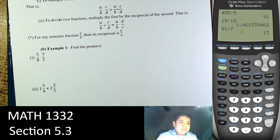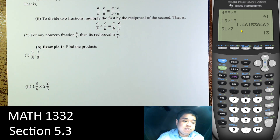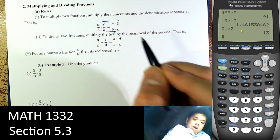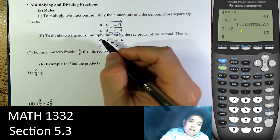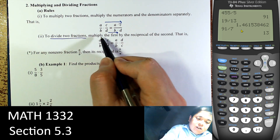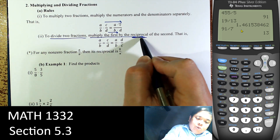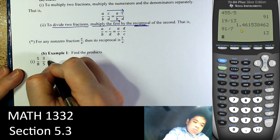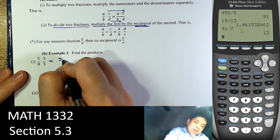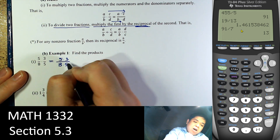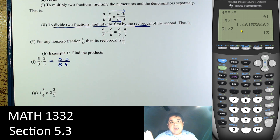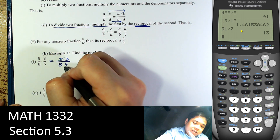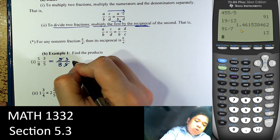Next, multiplying or dividing fractions. When we multiply, we multiply straight across — top and bottom. When dividing two fractions, we multiply by the reciprocal. The reciprocal is where we flip the fraction: A over B becomes B over A. For example, 5 times 3 over 8 times 5 — we can cancel the 5's — giving us 3 over 8.